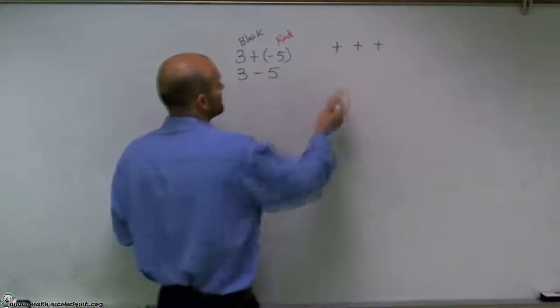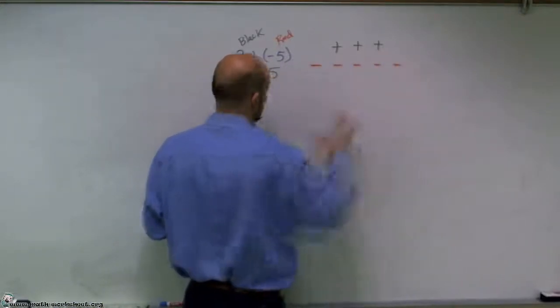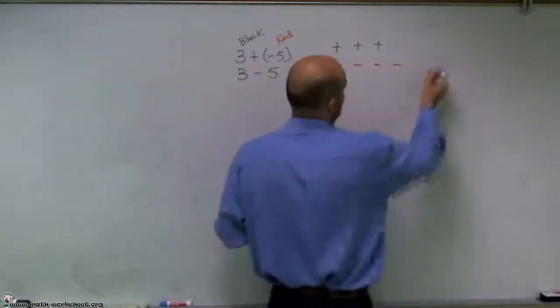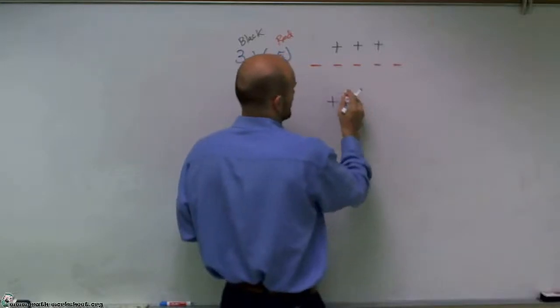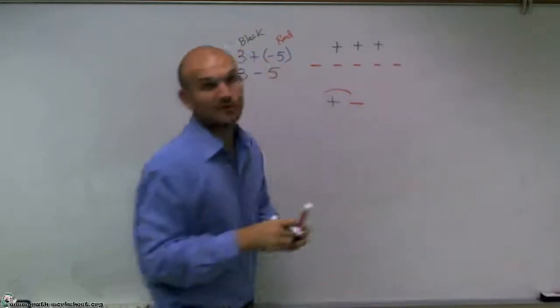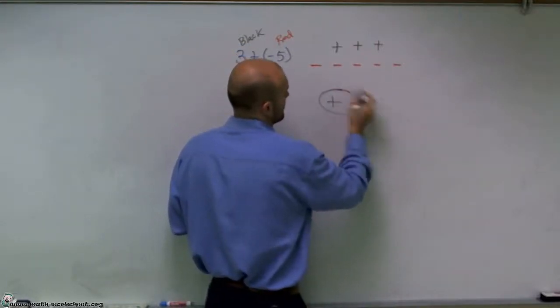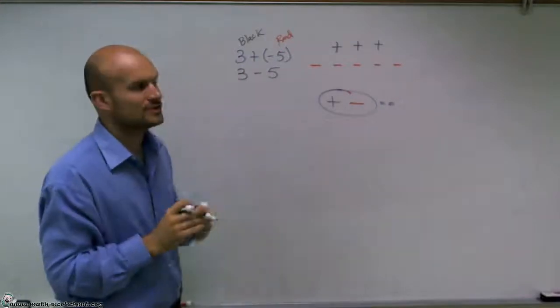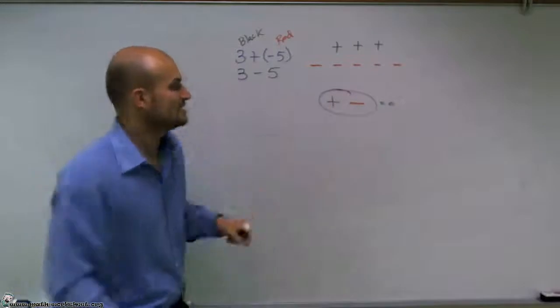And I had 5 negatives. The next thing to understand is that a plus and a negative, I'll use blue here now, cancel each other out to equal 0. So what I'm going to do now is match up a plus and a negative, a black and a red, equals 0.